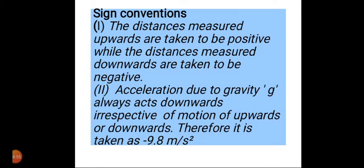What are the sign conventions for acceleration due to gravity? The first convention is: the distances measured upward are taken to be positive while the distances measured downwards are taken to be negative. Acceleration due to gravity always acts downwards irrespective of motion of upwards or downwards, therefore it is taken as -9.8 m/s².